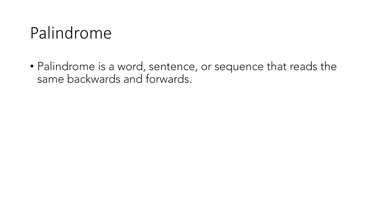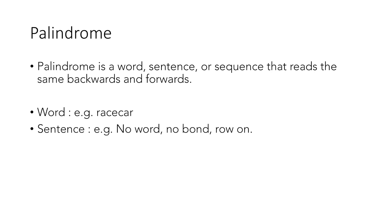Taking an example of a palindrome word, the word 'racecar' is a palindrome because if we read it backwards, that is from right to left, it again forms the word 'racecar'. Similarly, the sentence 'no word, no bond, row on' is a palindrome sentence because if we read it backwards ignoring the spaces and the comma, it again forms the same sentence.